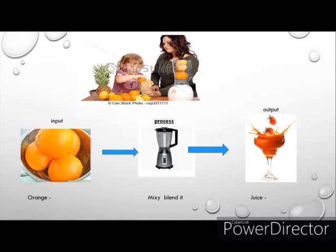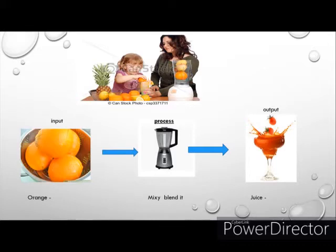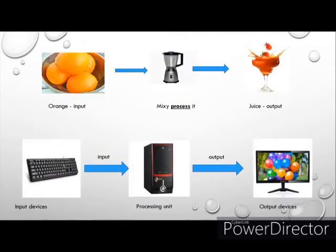The same thing happens in the case of a computer also. We gave oranges, sugar, and water to the mixer and we got juice. Similarly, if you want to get any result from the computer, or if you want to make the computer do something, first we have to give some commands, instructions, or data. That is called input. The data given to the computer is called input. Keyboard and mouse help us to give instructions to the computer.